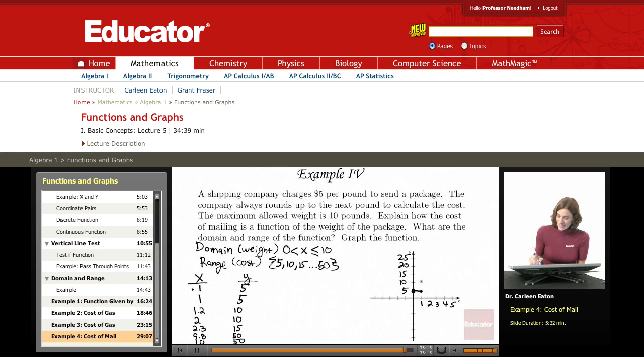Then, when I get to slightly over 1 pound, so there's an open circle, they're charging me $10. If I have 1.2, 1.3, 1.4, all the way up to 2, $10.